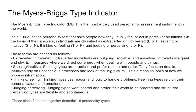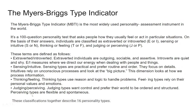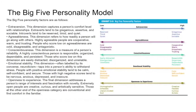Myers-Briggs tries to indicate and assess which type you are. Looking at the Big Five factors: extraversion captures a person's comfort level with relationships. Extroverts tend to be gregarious, assertive and sociable. Introverts tend to be reserved, timid and quiet.